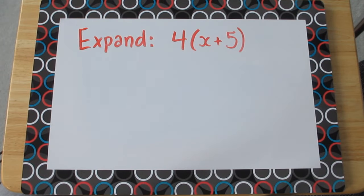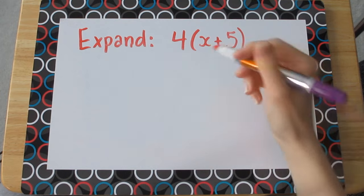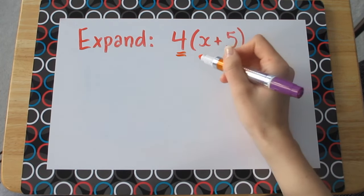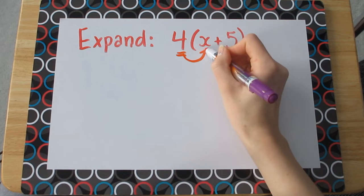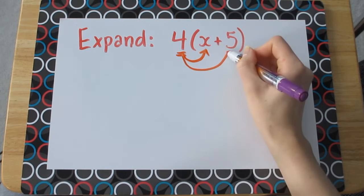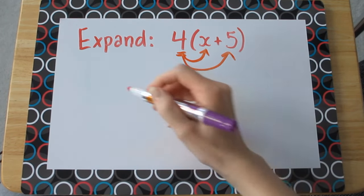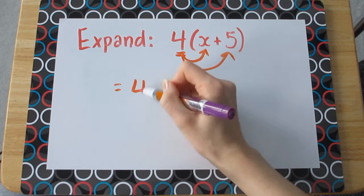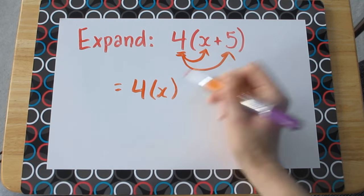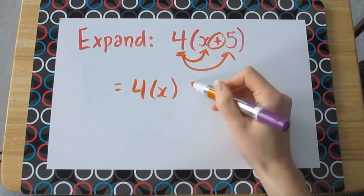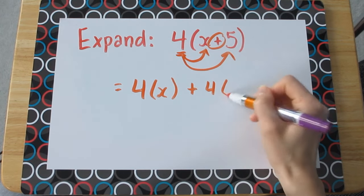Here's an example of a multiplication question you might be given. Expand 4 times x plus 5. With this question, we need to remember the distributive property, which is where we take the outside term and we need to multiply it with every single term inside the bracket. That means that we're going to be multiplying 4 times x and we're going to be adding it with 4 times 5.